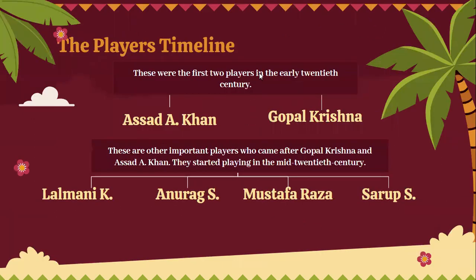The first two players in the early 20th century were Asade Khan and Gopal Krishna. Other important players who came after them and started playing in the mid-20th century include Lalmani K., Anurag Singh, Mustafa Raza, and Sarup Singh.